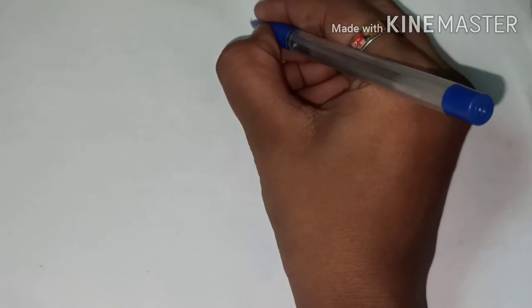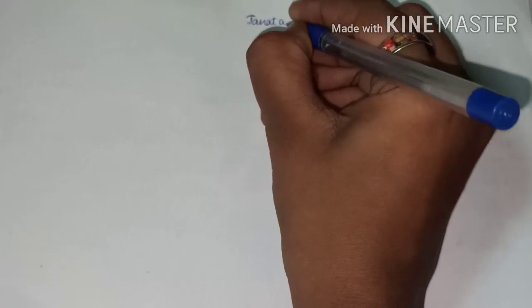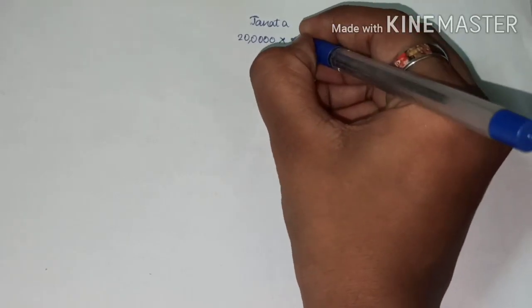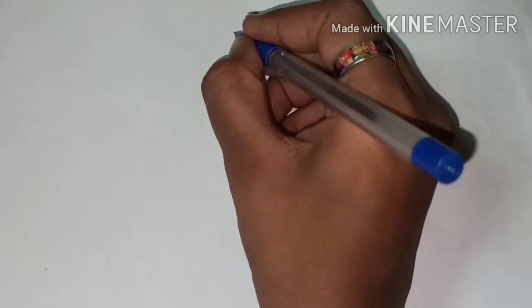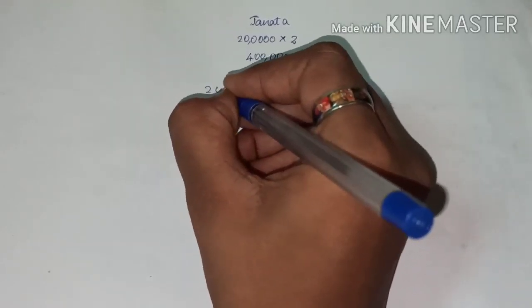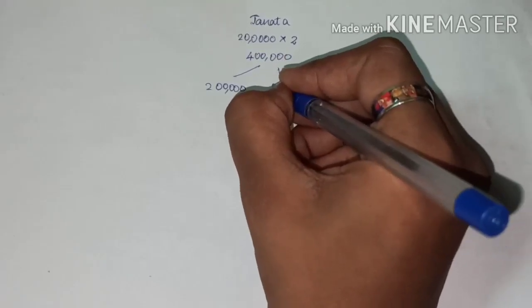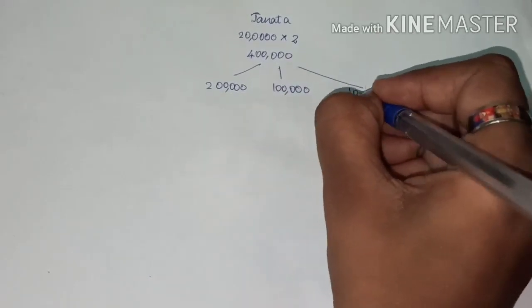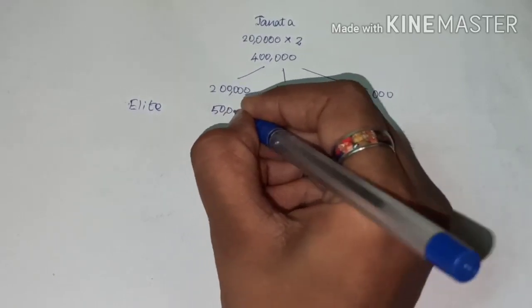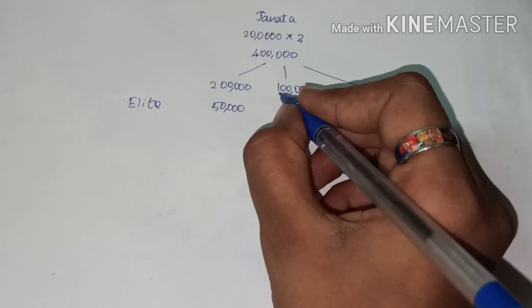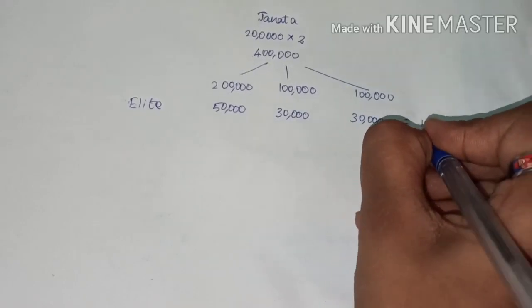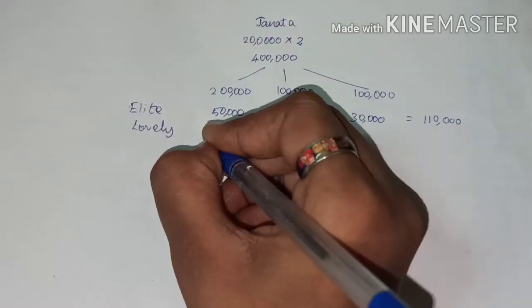Under the scheme, Janita production doubles from 2 lakhs to 4 lakhs. Split as 2 lakhs plus 1 lakh plus 1 lakh increases. For A Light: already 50,000 units, plus 30,000 for each 1 lakh increase in Janita, giving a total of 1,10,000. For Lovely: 1 lakh base, plus 70,000 and 70,000, giving a total of 2,40,000.